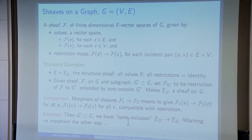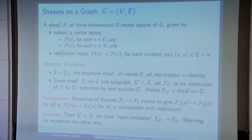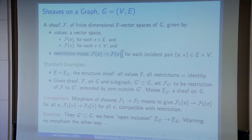A sheaf on a graph G is given by its values, which are just finite-dimensional vector spaces — one for each edge, one for each vertex. Some can be zero; they don't have to be the same. For each edge and vertex that is incident upon the edge, you have a so-called restriction map, which is just a linear map of the associated vector spaces. That's what a sheaf is: for each vertex and each edge you have a vector space, and restriction maps from the edges to the incident vertices.